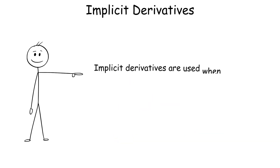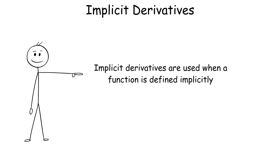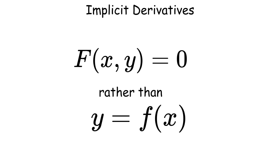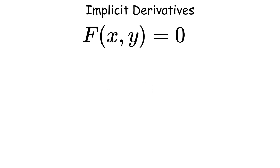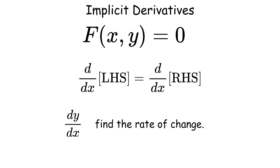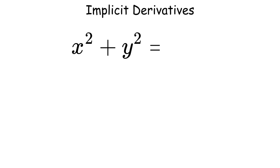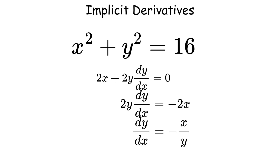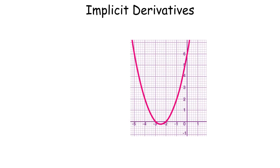Implicit derivatives are used when a function is defined implicitly, such as f of x and y equals 0, rather than explicitly as y equals f of x. By differentiating both sides with respect to x and solving for dy over dx, we find the rate of change. For example, for x squared plus y squared equals 16, differentiating gives 2x plus 2y times dy over dx equals 0, so dy over dx equals negative x over y, describing the slope of the circle at any point. This is useful for analyzing curves and related rates.